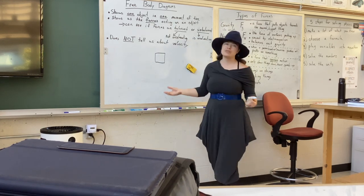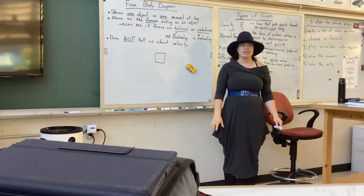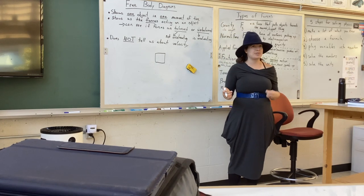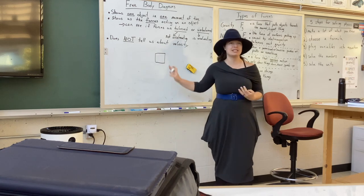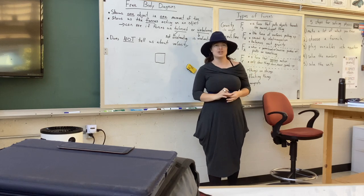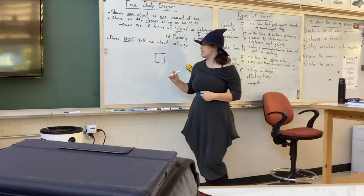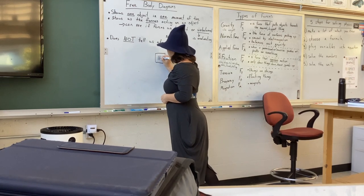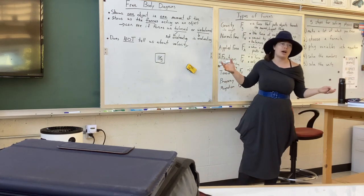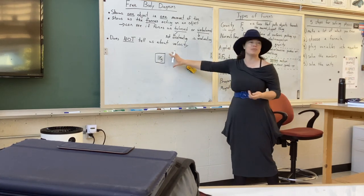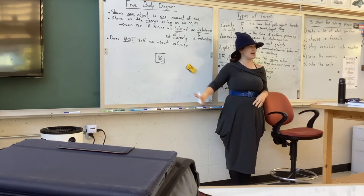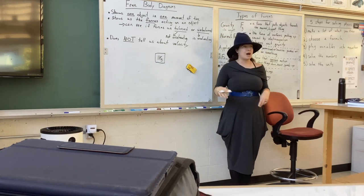Whenever we're drawing, we just draw a box. If you want to be more specific, one of the things we can do is write the mass of the object in kilograms inside the box. So let's say this is Gabby's water bottle — it looks like about a one-liter water bottle. If that water bottle is full, it has a mass of about one kilogram. So 32 ounces is about a liter, and a liter of water has a mass of about a kilogram, so approximately one kilogram.